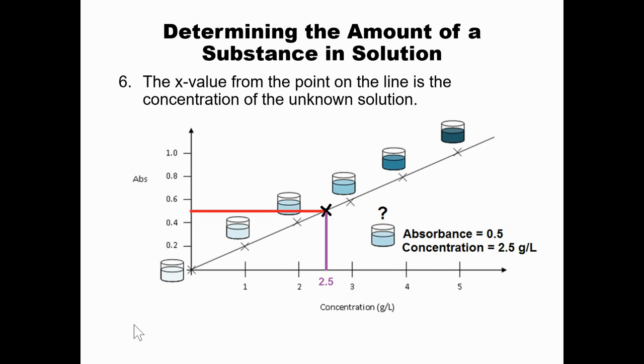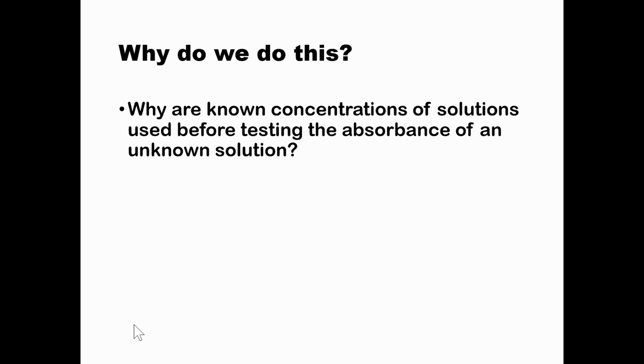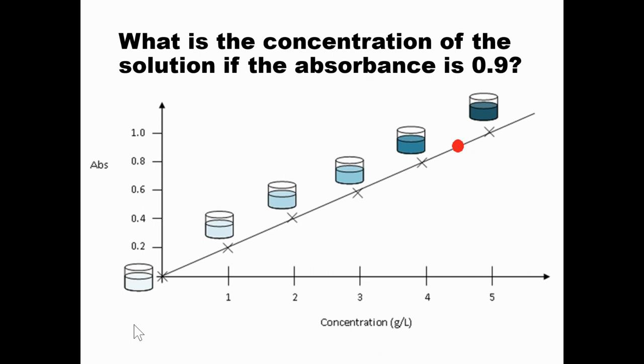So pretty important stuff, guys. We can do a lot of stuff with this. So why do we do this? Why are known concentrations of solutions used before testing the absorbance of an unknown solution? We're doing it because it gives us a reference point, but when we measure the absorbance, we can connect it to what the concentration is. So we can determine the concentration if we have references of the different absorbance values for different concentrations.